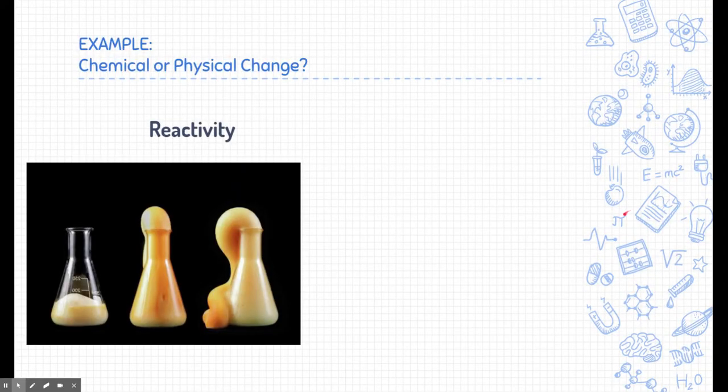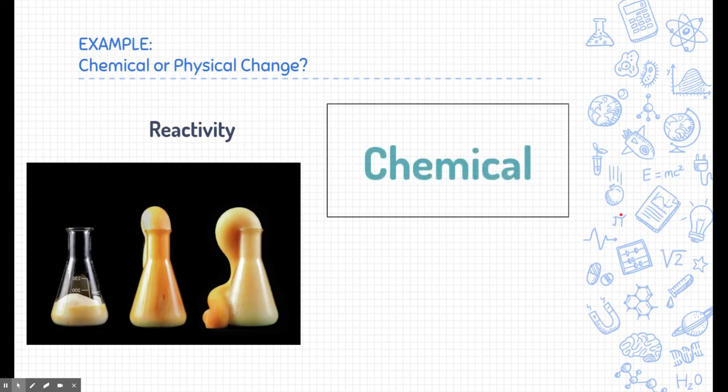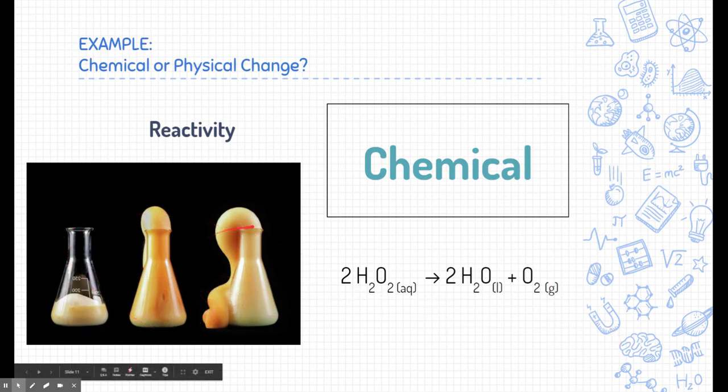What about reactivity? If you said chemical change, you're exactly right. What we're looking at here is hydrogen peroxide. And hydrogen peroxide decomposes into water and oxygen. This is called an elephant toothpaste reaction that causes that reaction to happen fairly quickly by adding something called a catalyst. But that's hydrogen peroxide decomposes into oxygen gas and water. And that oxygen gas causes this elephant toothpaste reaction to bubble up.